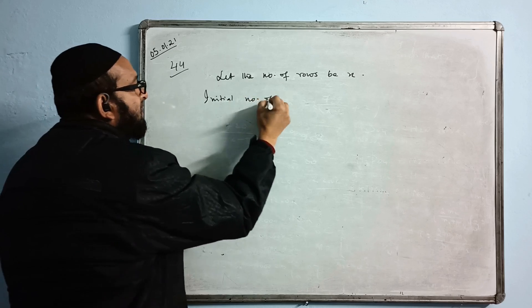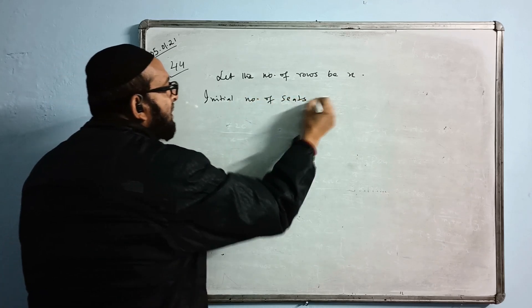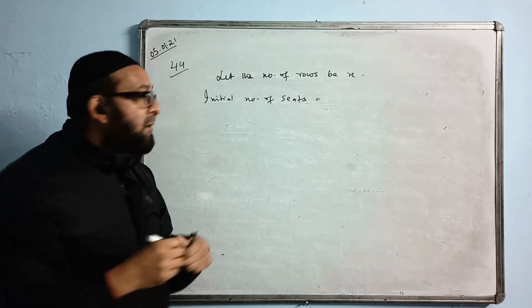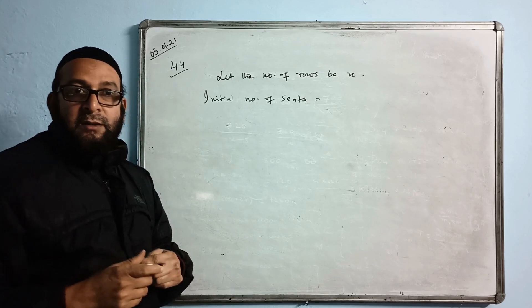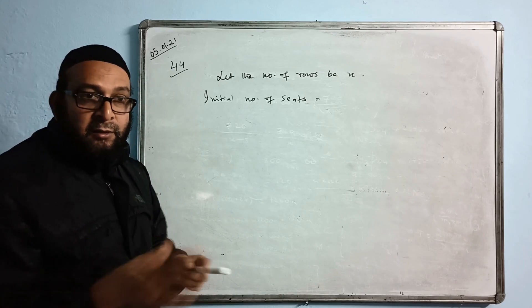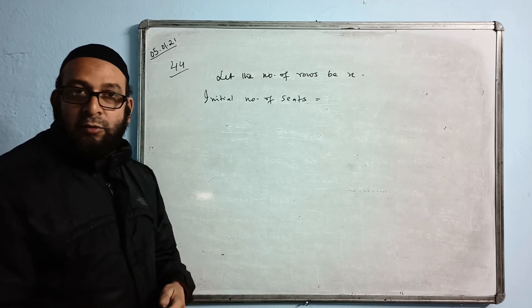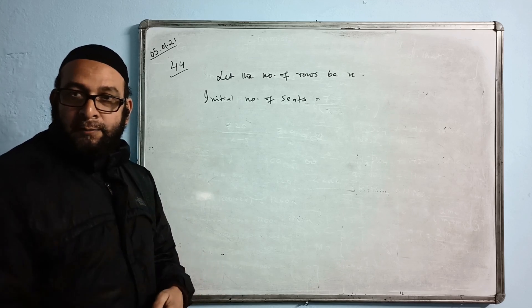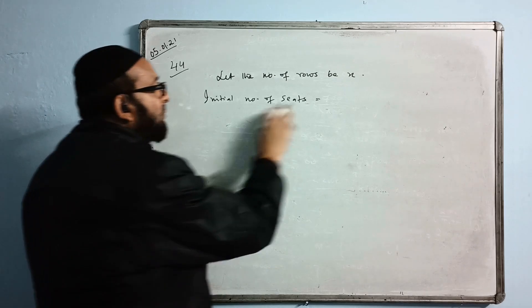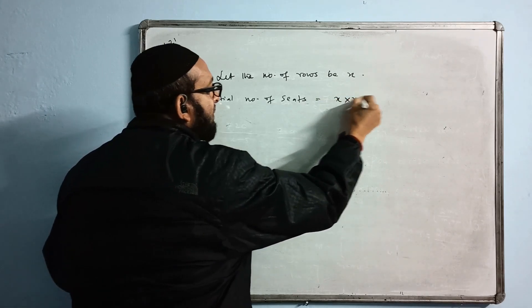Initial number of seats: how many seats are there? The number of rows is the same as the number of seats in each row. Suppose there are 10 rows, then in each row there are 10 seats. Total how many seats are there? 10 into 10. Initial number of seats will be X into X, that is X squared.